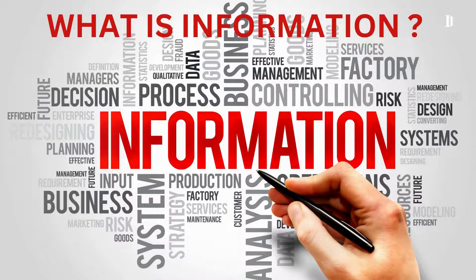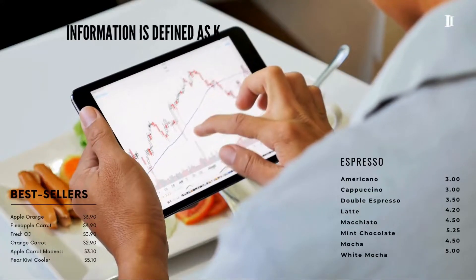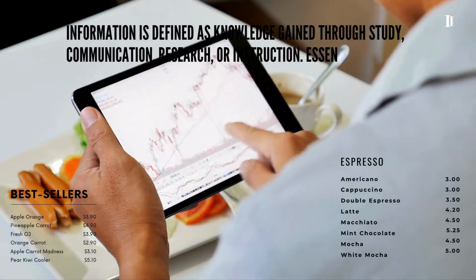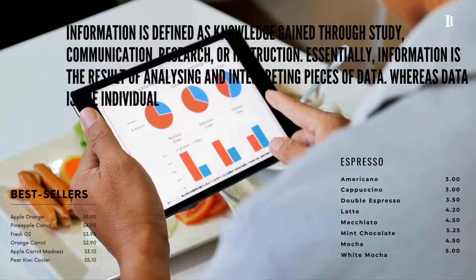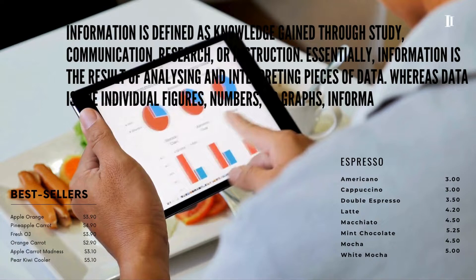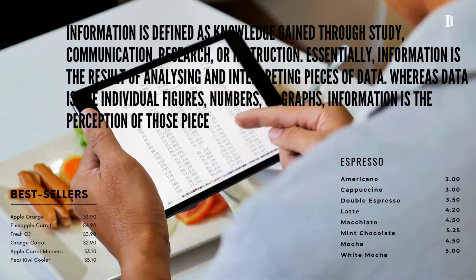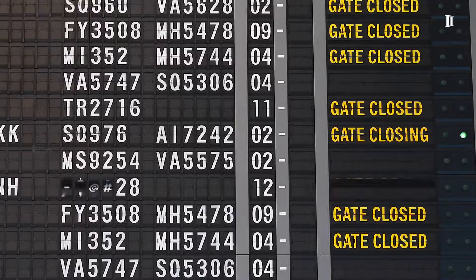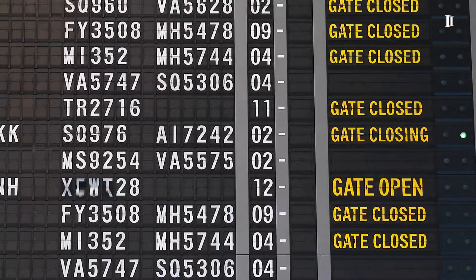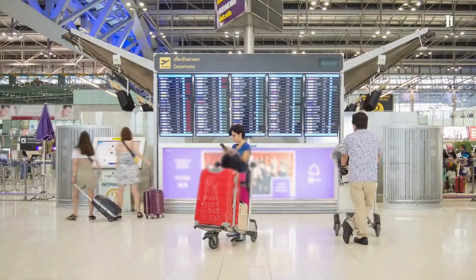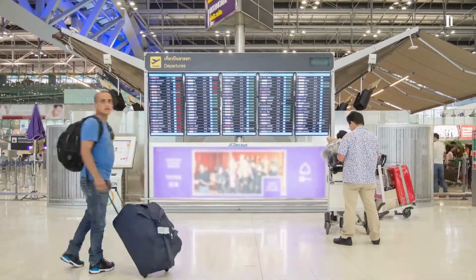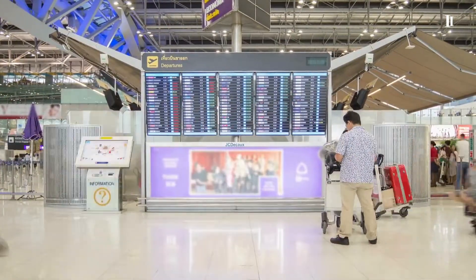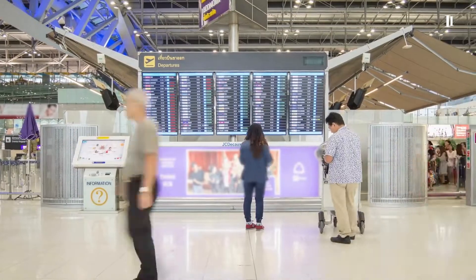What is information? Information is defined as knowledge gained through study, communication, research, or instruction. Essentially, information is the result of analyzing and interpreting pieces of data. Whereas data is the individual figures, numbers, or graphs, information is the perception of those pieces of knowledge.